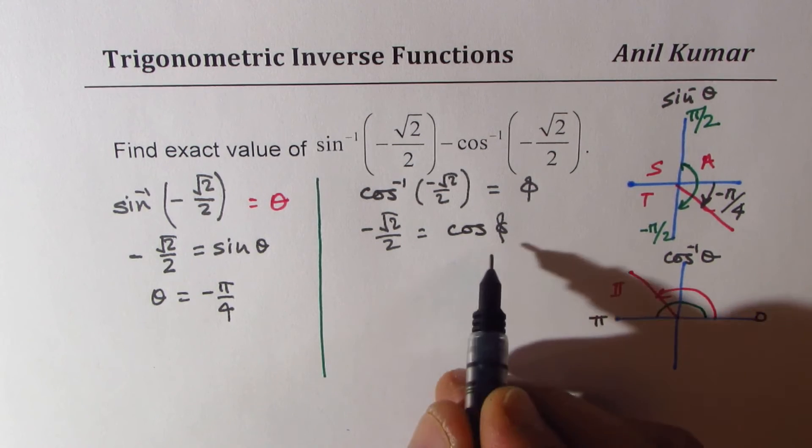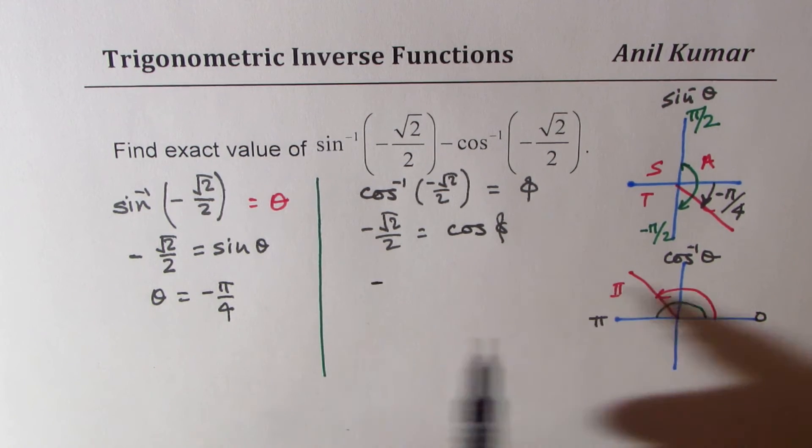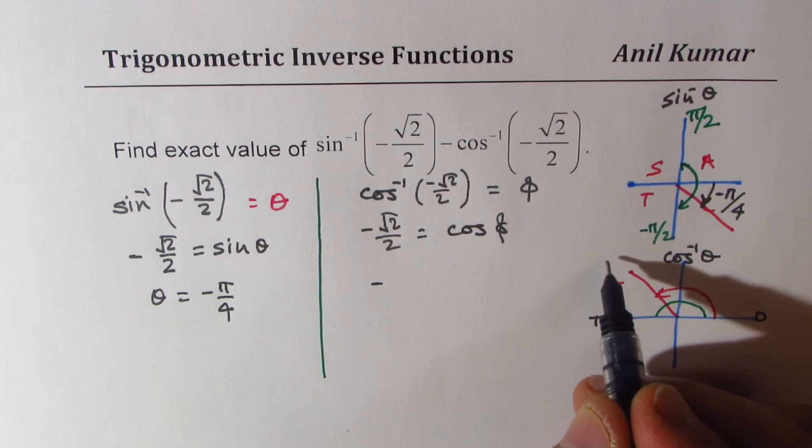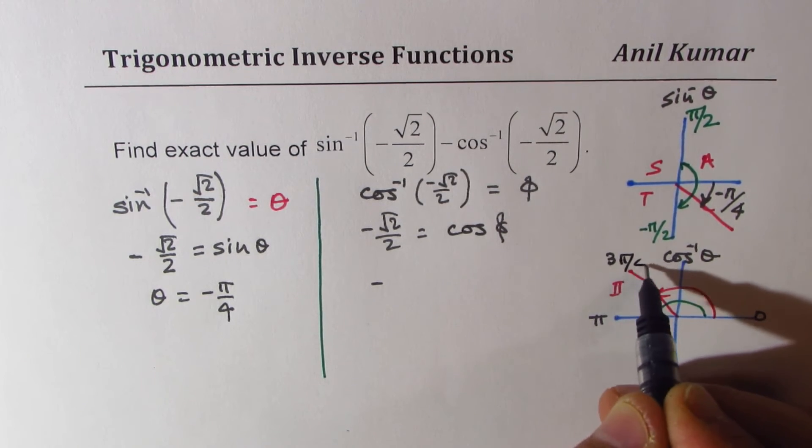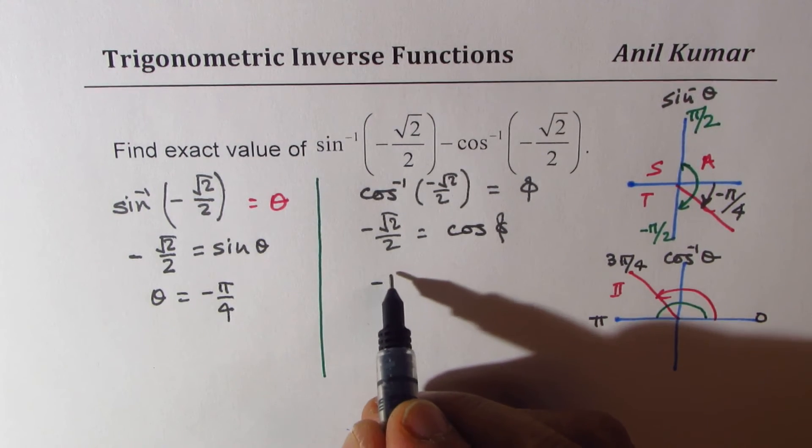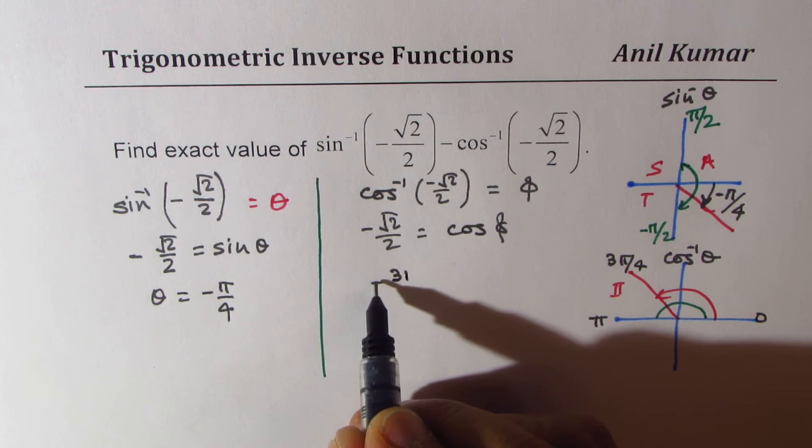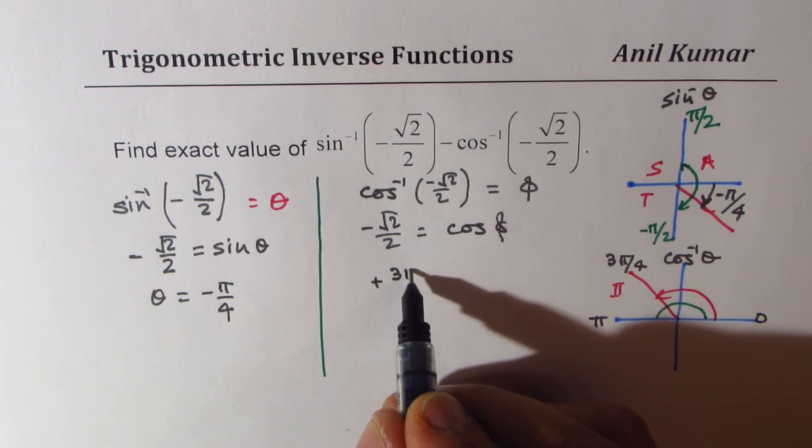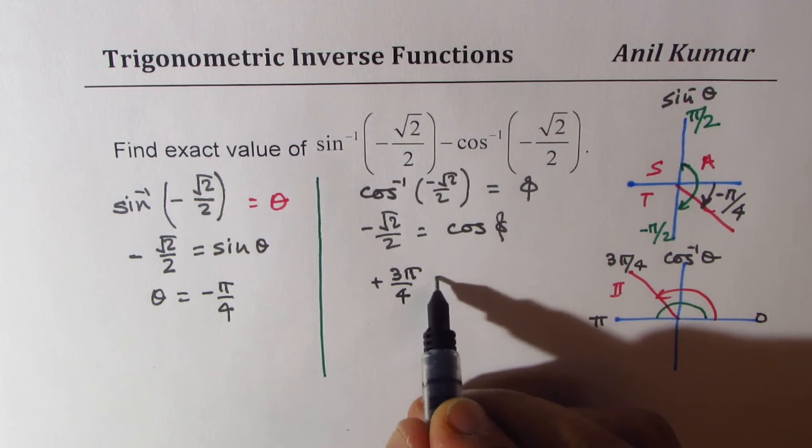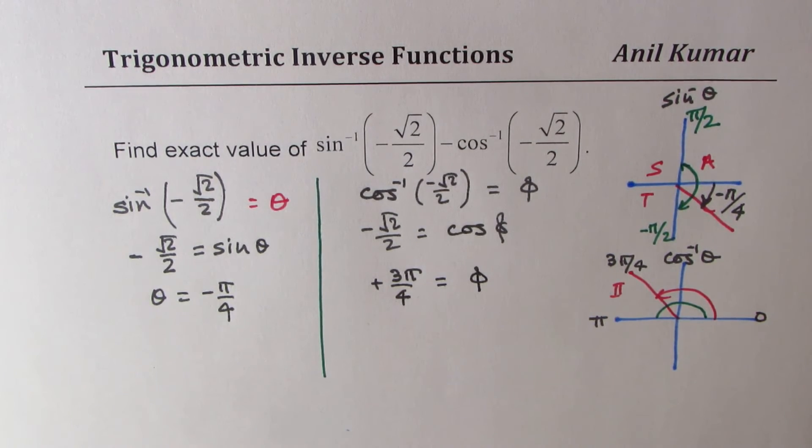which is going to give us negative square root 2 over 2 value is when phi is equal to... this is 3 pi by 4. So we have minus 3, I'm sorry, it is plus 3 pi by 4, when cos is negative, that is the value of phi.